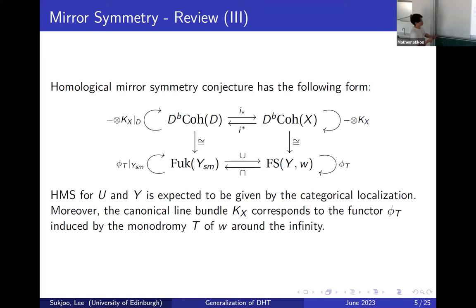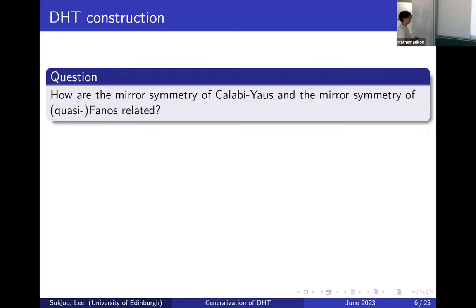The more interesting thing is that this equivalence is expected to be compatible with a certain auto-equivalence in the Fukaya category to the symplectic function on the B side. The operation given by tensoring with the line bundle on one side corresponds to the monodromy of the potential on the other side. The main question I want to understand is how the mirror symmetry of Calabi-Yau and the definition of the Fano are related, in the case where you have a Calabi-Yau degeneration into several pieces.